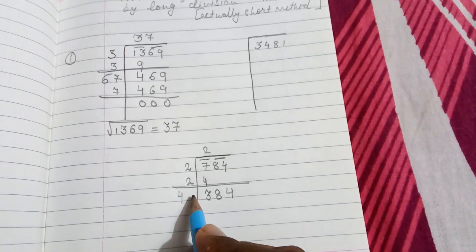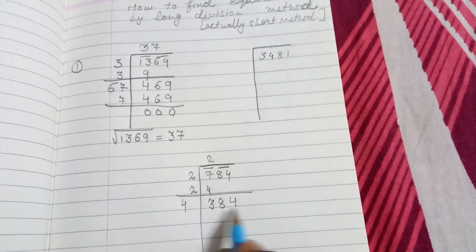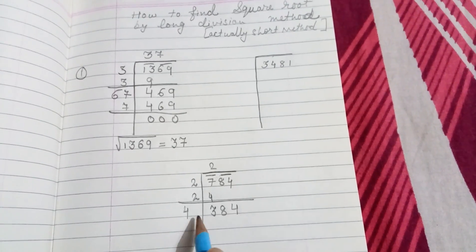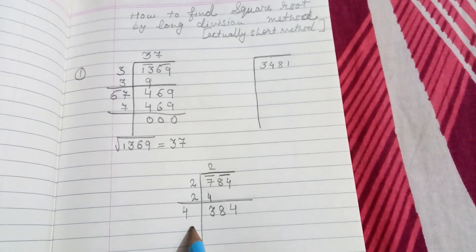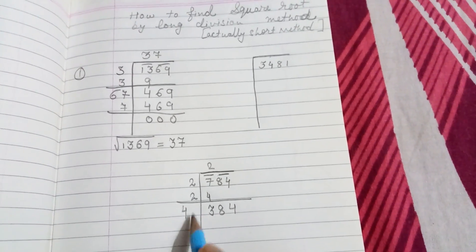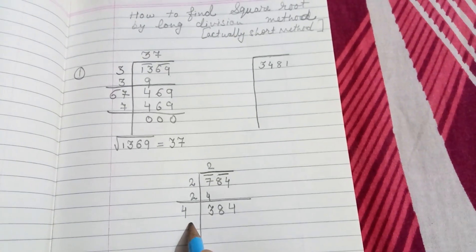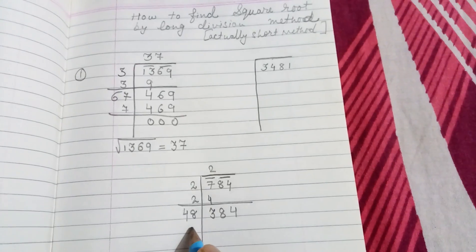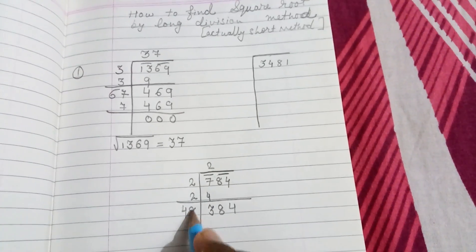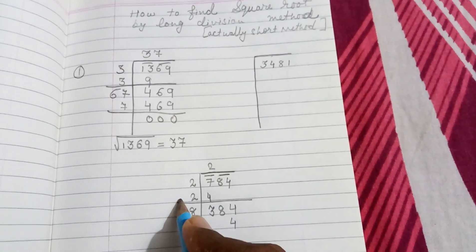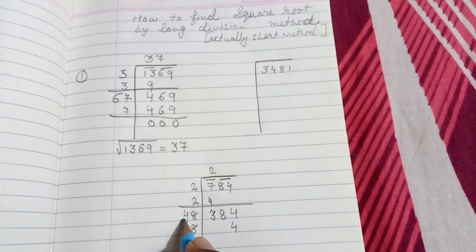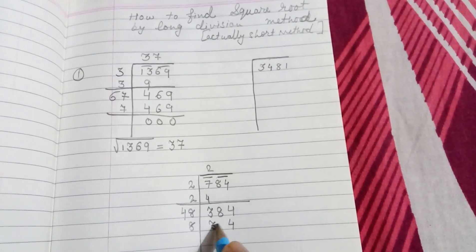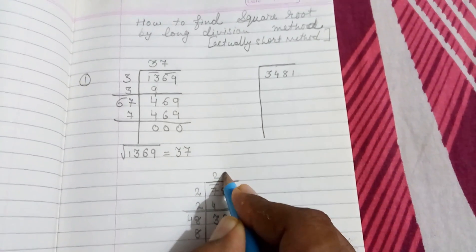Now we know what number we will take here. If I take 1, 1×1 will not come at the last. 2×2 is 4, 42×2 will give you a smaller number. So you can take 8. 8×8 is 64, so last number matching with this. You have to take 8 only. This will give you perfect answer. 48×8 is 64 carry 6, 4×8 is 32 plus 6 is 38.